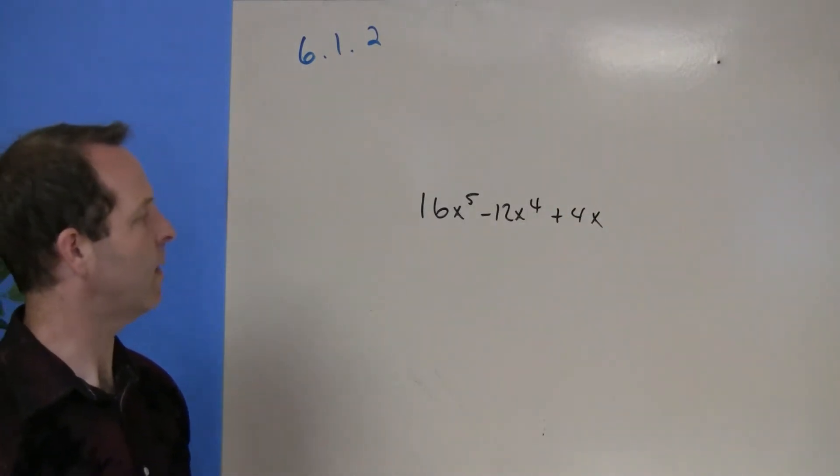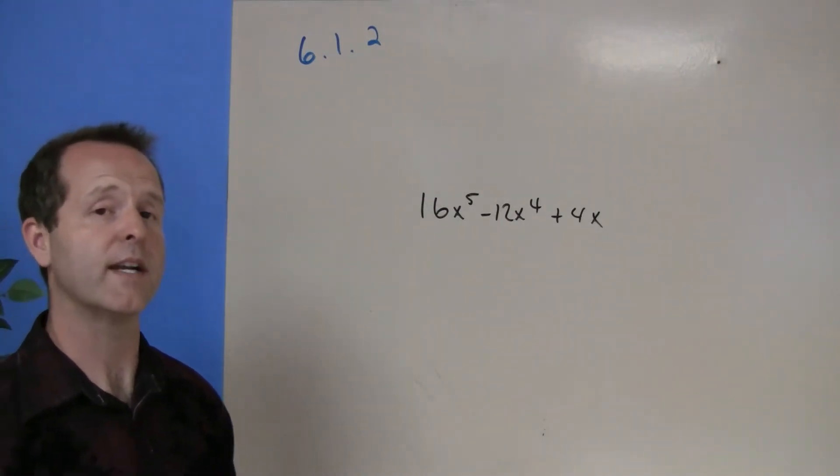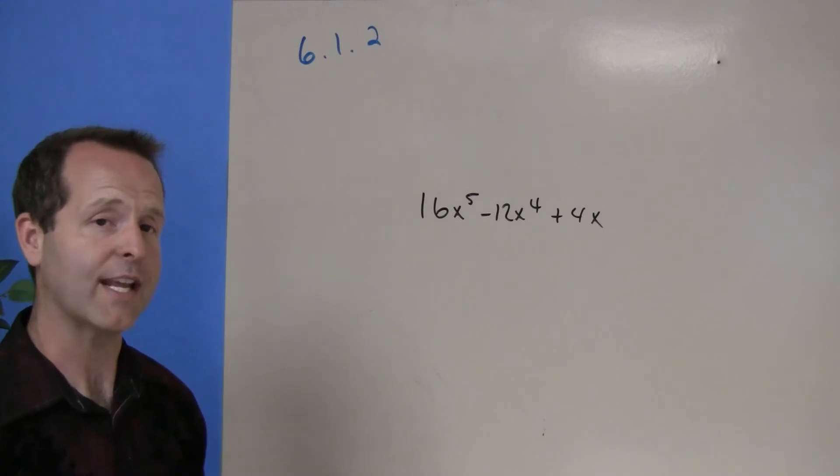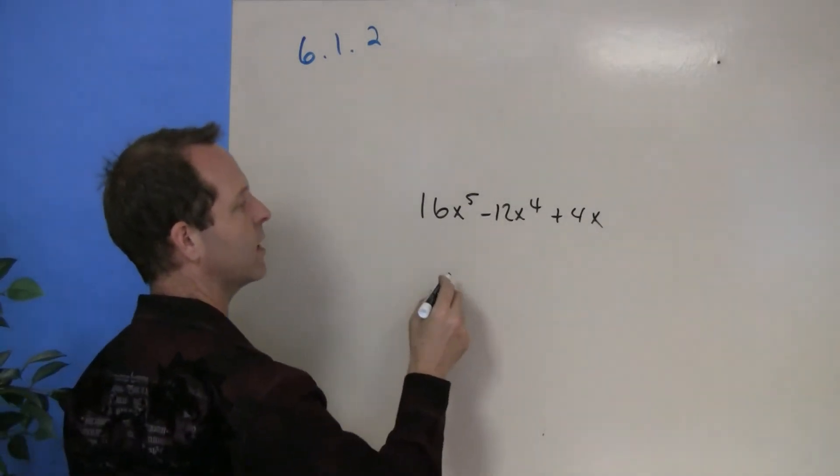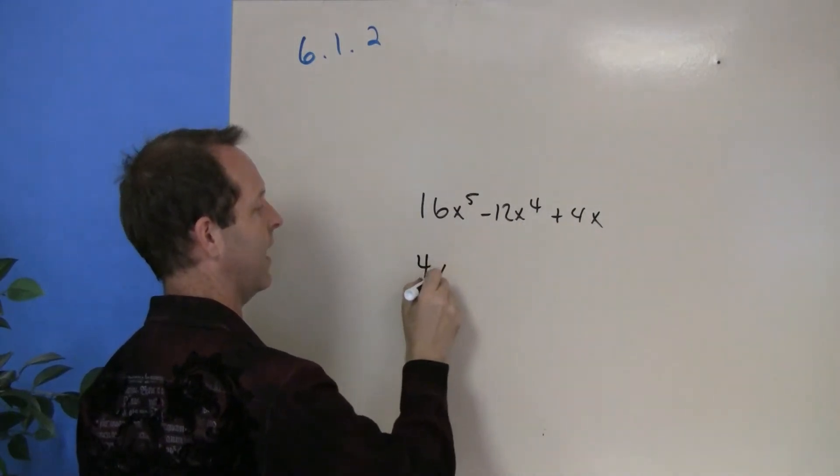16x⁵ - 12x⁴ + 4x. Again, let's take the greatest common factor and factor out each of the terms. The greatest common factor has a 4 in it. x to the 5th, x to the 4th, x to the 4th, x has an x.